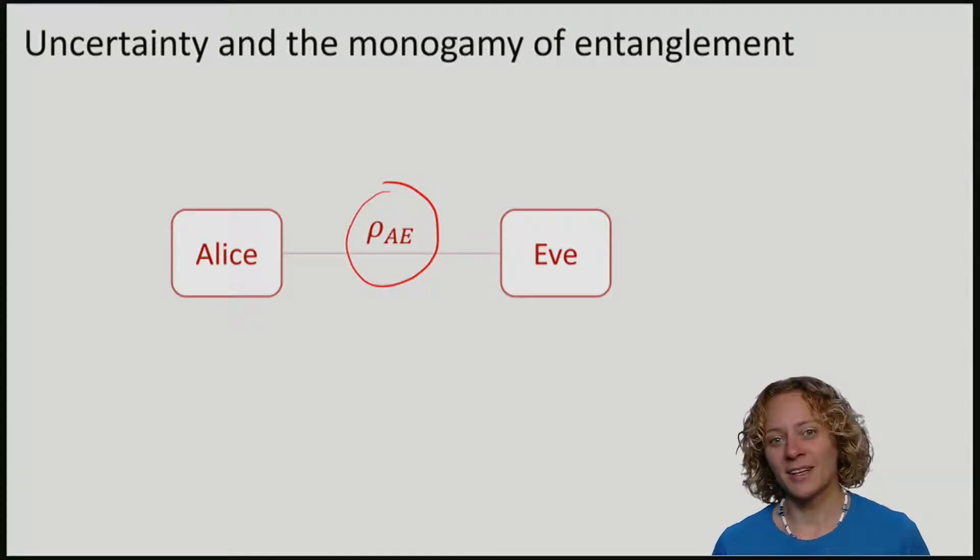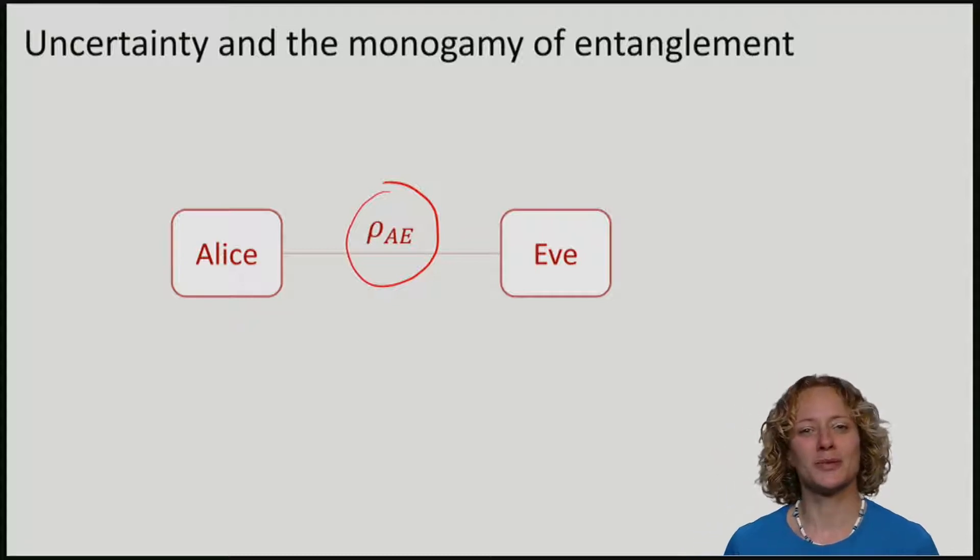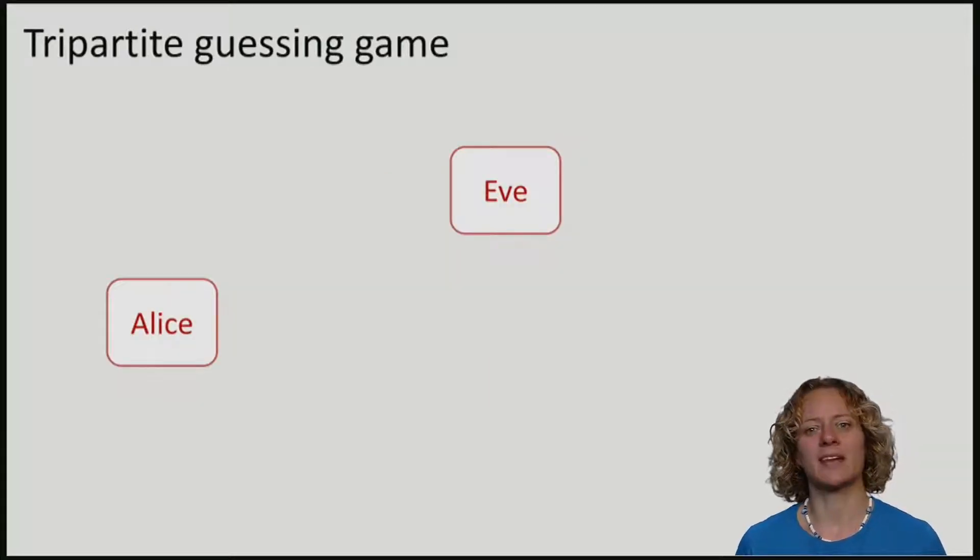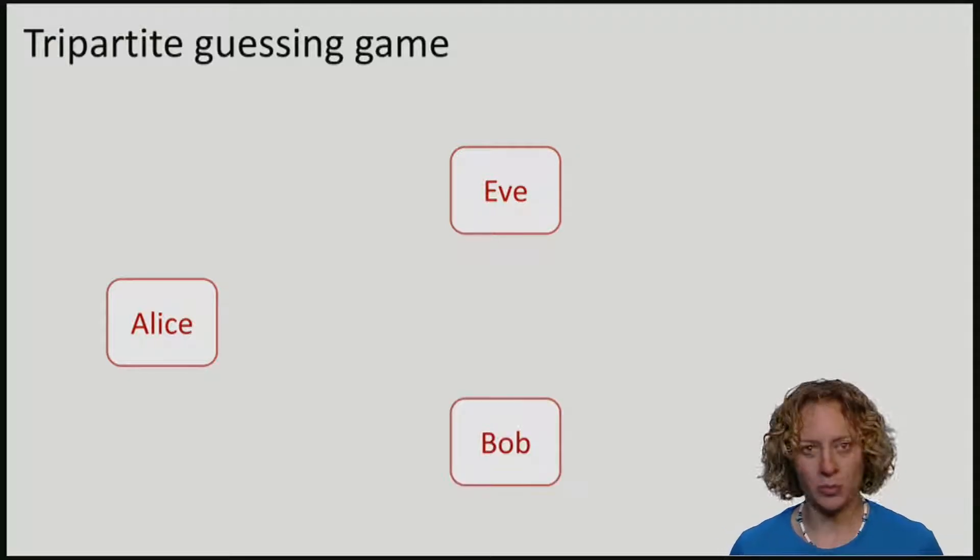In fact, we hope that in most executions of a quantum protocol there is not even an attacker Eve that could test any entanglement for us. So how can we gain confidence that there is some uncertainty about Alice's measurement outcomes? The key to this is to not look at just two parties, Alice and Eve, but at three: Alice, Bob and Eve.